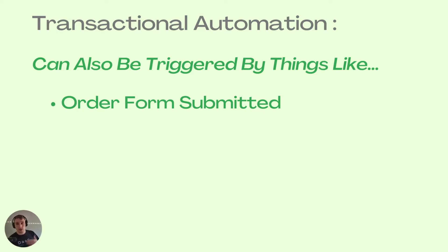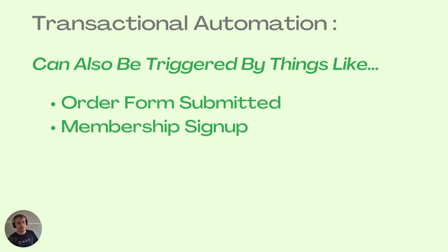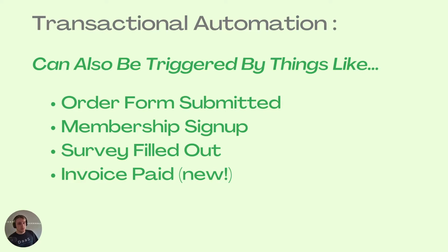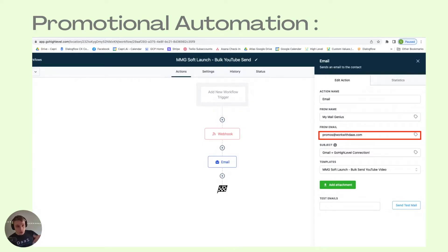Transactional automation within Go High Level can also be triggered by things like an order form submission on a funnel page, a membership sign-up, a survey being filled out, or the brand new 'invoice paid' trigger — so when you send an invoice to a client and they pay it, you can now trigger an automation off of that. On the promotional side, this is more like bulk sending to your whole list to drive new signups, conversions, or branding.